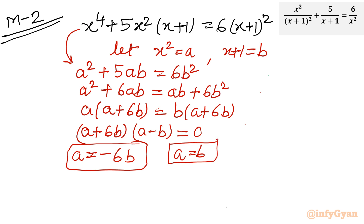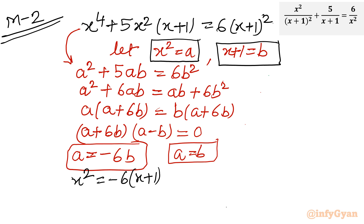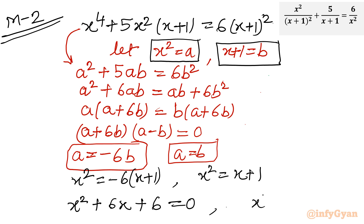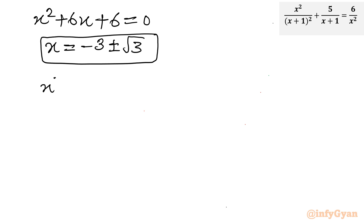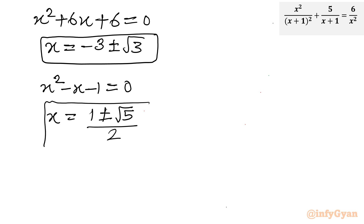Substituting back a = x² and b = x+1: from a = −6b we get x² = −6(x+1), giving x² + 6x + 6 = 0. From a = b we get x² = x+1, giving x² − x − 1 = 0. These are identical to the equations from Method 1. Solving: x = −3 ± √3 and x = (1 ± √5)/2. I hope this video will be meaningful to you.